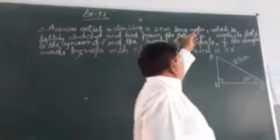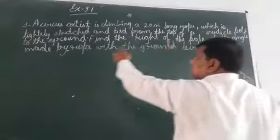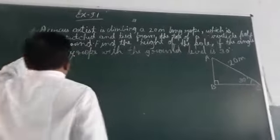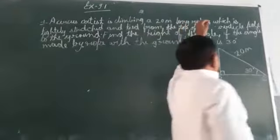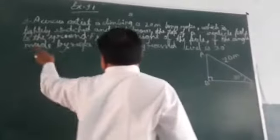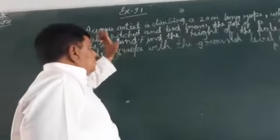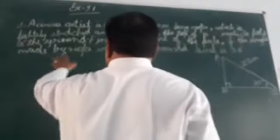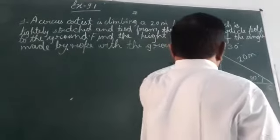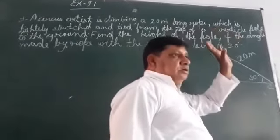A 20 meter long rope which is tightly tied from the top of a vertical pole to the ground. Find the height of the pole if the angle made by rope with the ground level is 30 degrees.